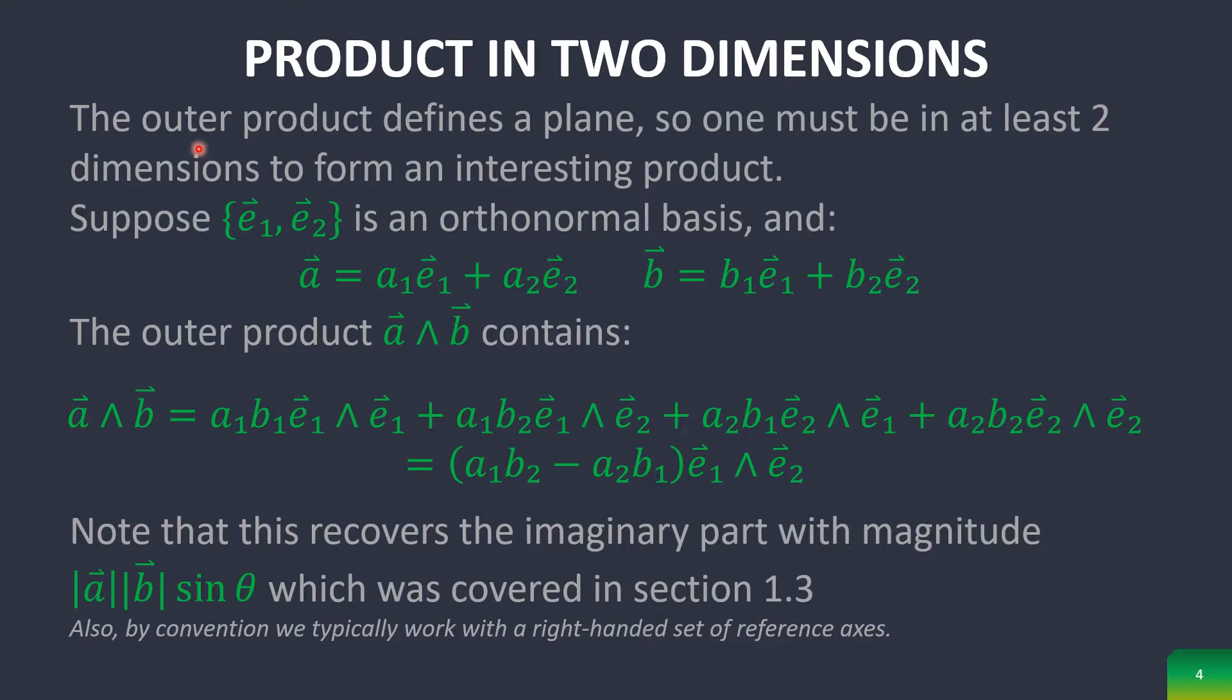must be in at least two dimensions to form an interesting product, which is good, because why would you go below that? So let's take this orthonormal basis, meaning that these are unit vectors, and they are orthogonal to each other. We can have the vector component notation right here of these two vectors a and b. This thus brings us to the outer product of a and b, which is denoted as a wedge b. And anyway, it creates this thing right here, which simplifies down to this, which actually recovers the imaginary part from the complex numbers video right here.